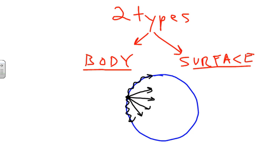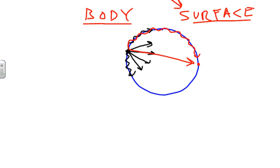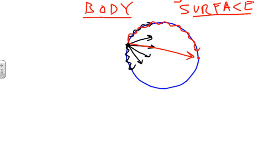If we had a seismograph station on the opposite side, we would feel the body waves first — they travel right through the earth before the surface waves have time to travel all the way around. So we get those body waves first. There are two types of body waves we're going to focus on.